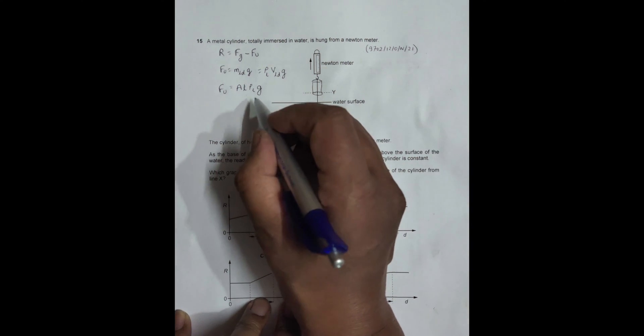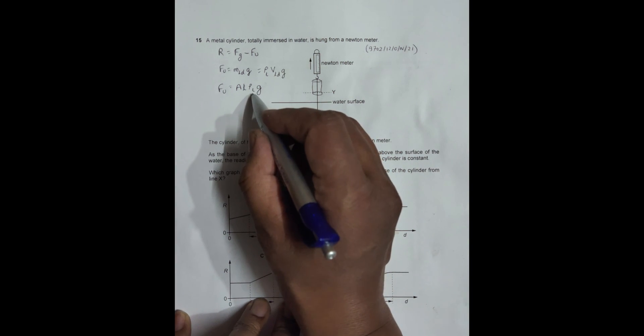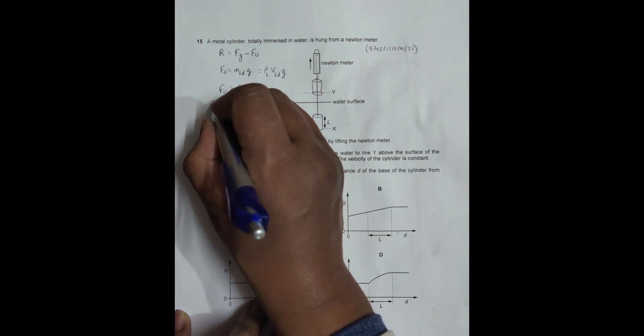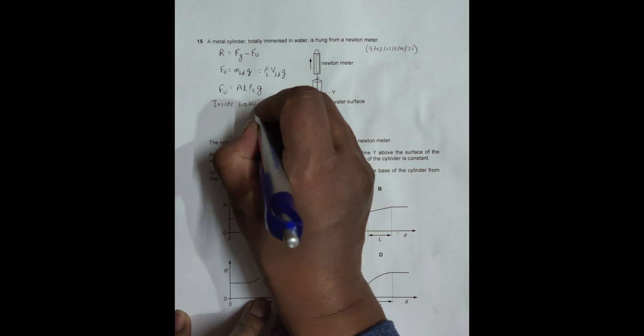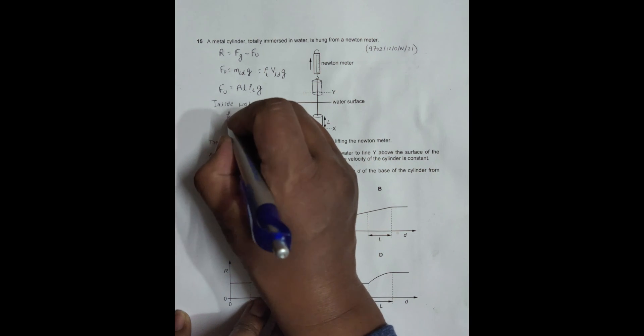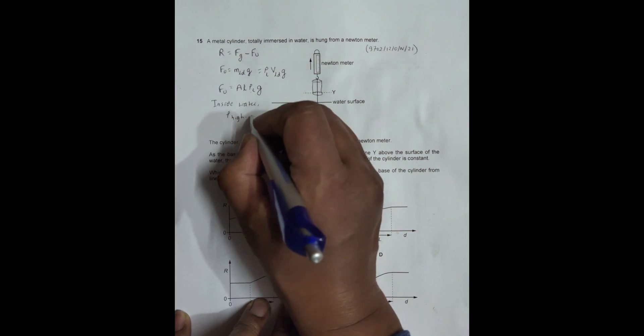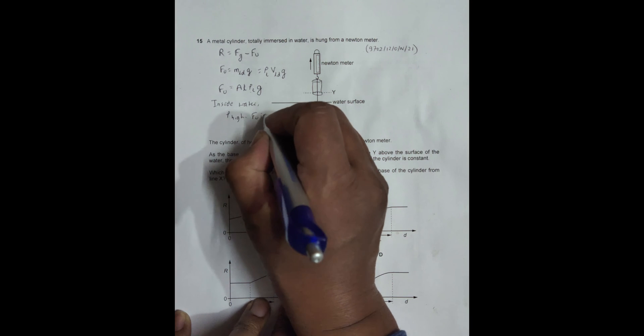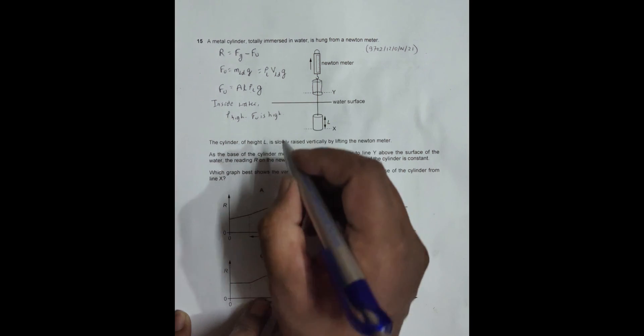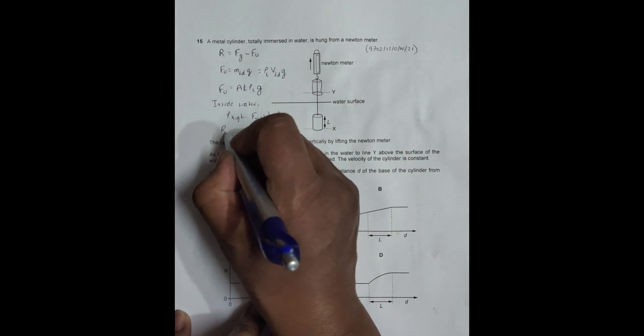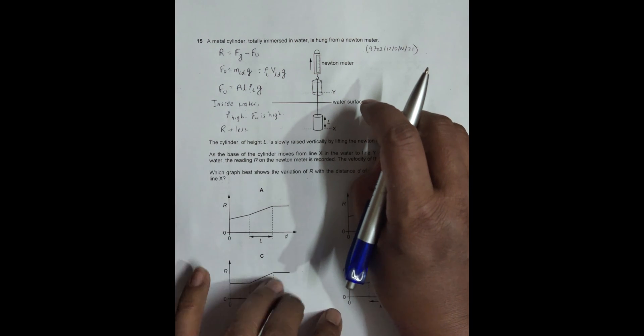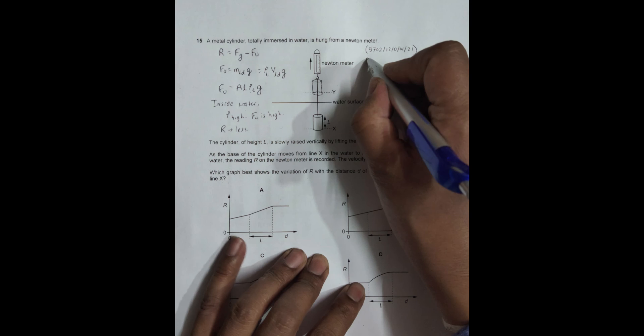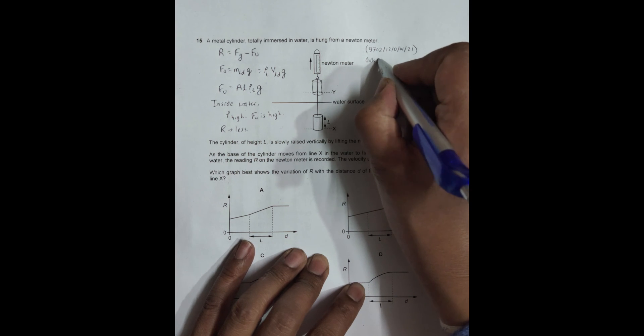When it is fully immersed in water, ρ is high. Inside water, ρ is high, so FU is high. That means R is less - inside water R is less.